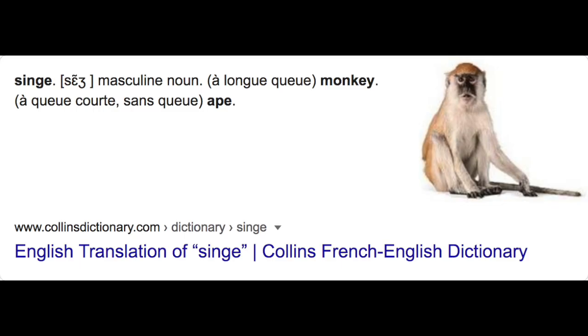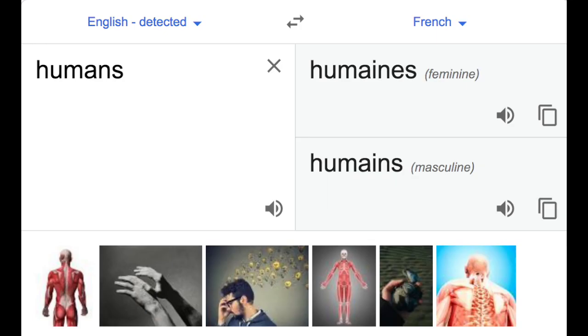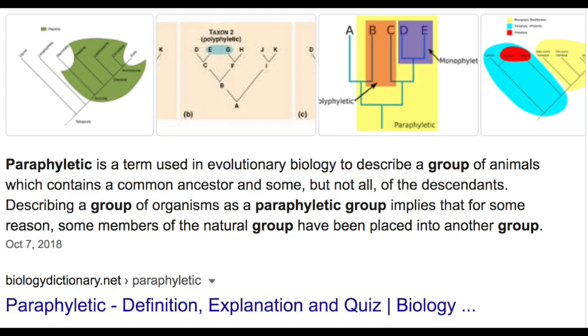In France, apes are called sange and so are monkeys. In English, we differentiate these two terms. But in both languages, humans are different from other primates. Does that make French right and English wrong? Does that make both languages wrong? No. It means that colloquial languages have no problem describing paraphyletic groups. It is useful to have languages that can make these distinctions.